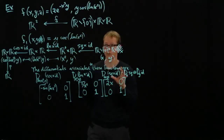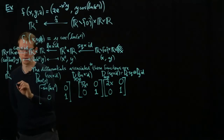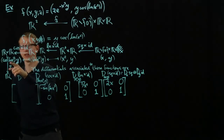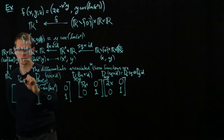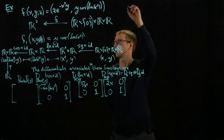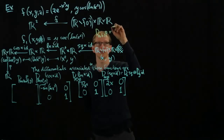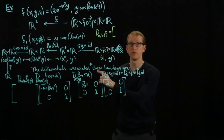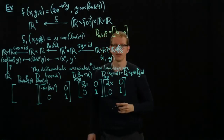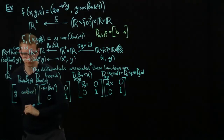That covers the first three functions. The last one is the differential of the product function P, evaluated at (cos(ln(x²)), y). Recalling the formula: D_{(A,B)}P is the 1×2 matrix [B, A]. So this is going to be the 1×2 matrix [y, cos(ln(x²))].